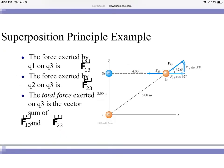Here we have a superposition principle example. We have the force exerted by Q1 on Q3 is right here as F13. The force exerted by Q2 on Q3 is right here at F23. And the total force exerted on Q3 is a vector sum of Q13 and of F23.